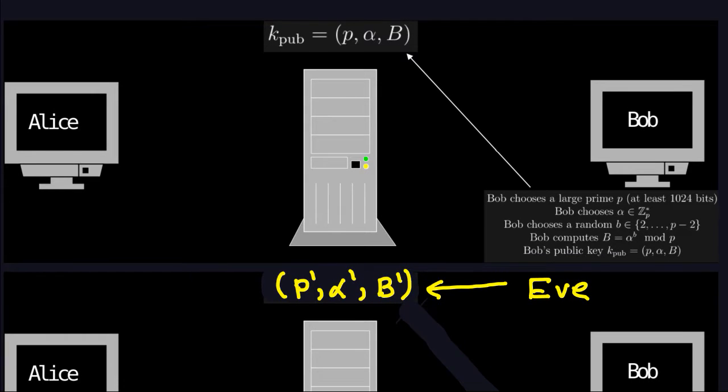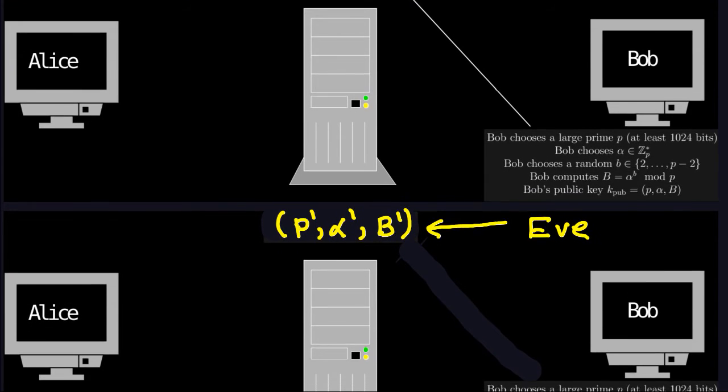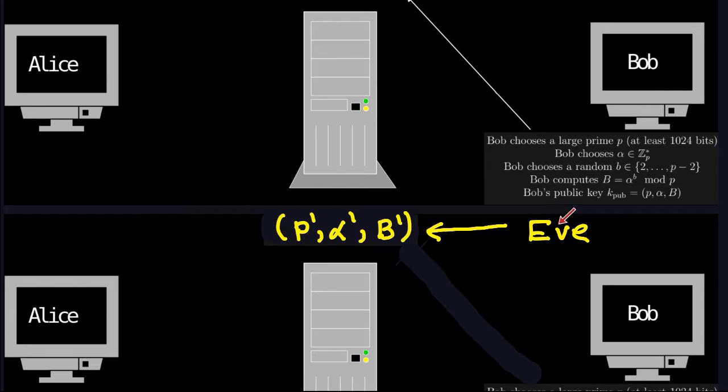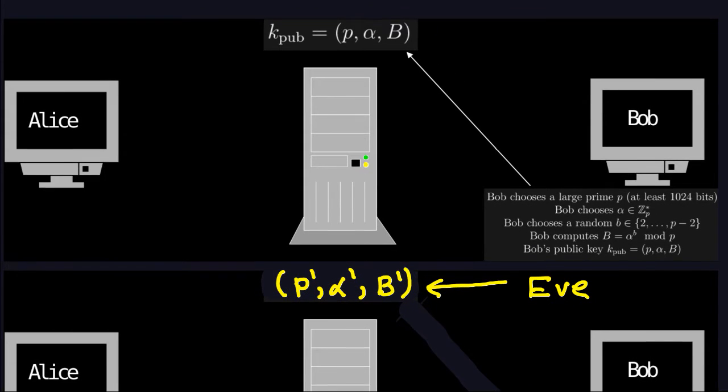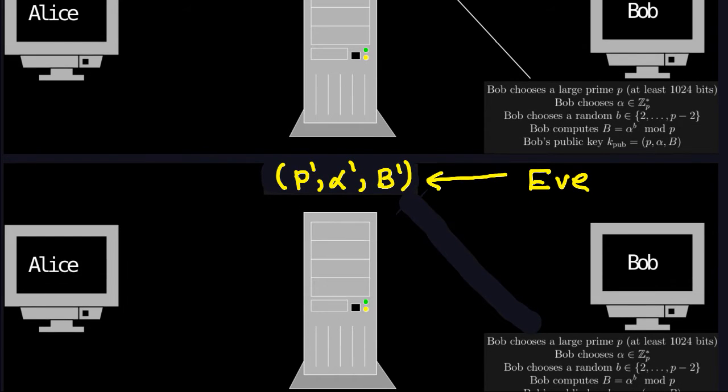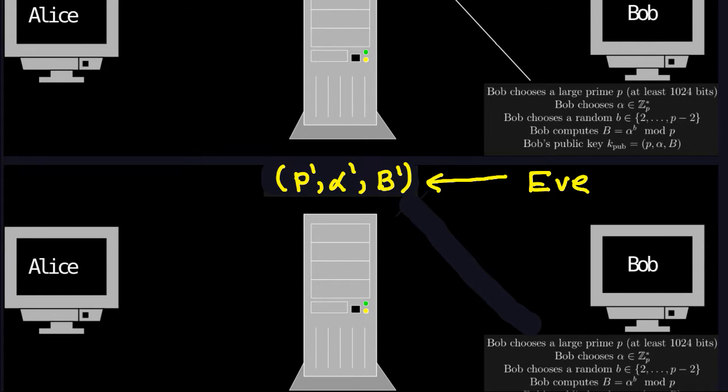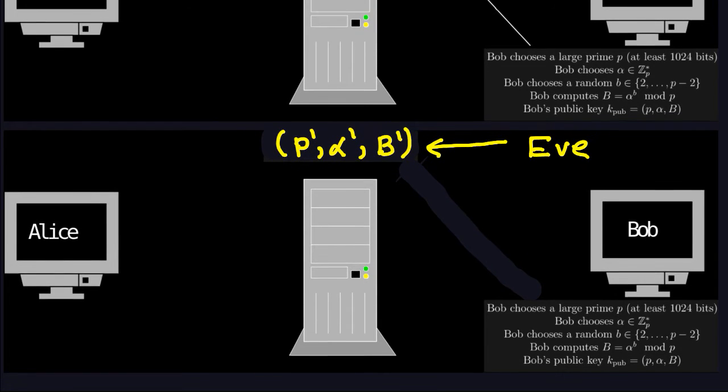Now one thing that Eve can do is impersonate Bob and just put a P prime, Alpha prime, B prime. The prime here means just another number different from P, Alpha and B. If that happens, then Alice will grab this thinking it's from Bob. She will do the encryption, send the messages, and of course Eve will just get the plaintext because she has all the information for the encryption. That would be pretty bad if the attacker could impersonate Bob.